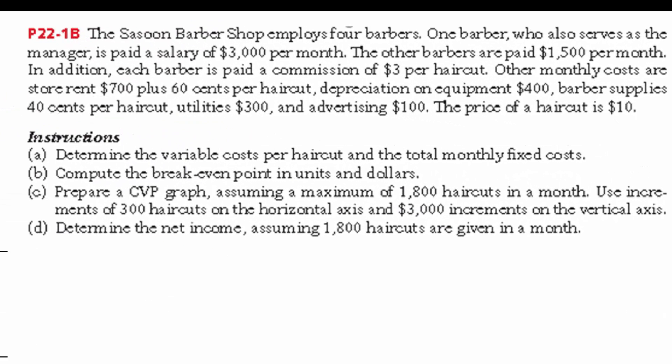Here are the facts. This Sassoon Barbershop employs four barbers. As I read these off, think about whether each cost is fixed — not varying in proportion to sales — or variable, varying in direct proportion to sales. They have one barber making $3,000 a month and three barbers making $1,500 a month each.